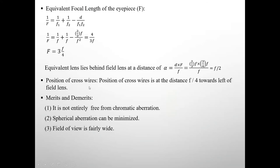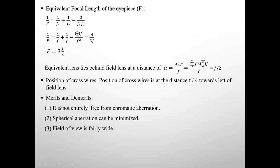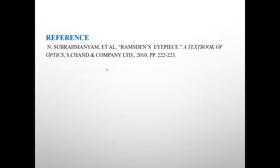The position of the cross wires is at a distance F/4 towards the left of the field lens. Now the merits and demerits of this eyepiece are: it is not entirely free from chromatic aberration; spherical aberration can be minimized; and the field of view is fairly wide.